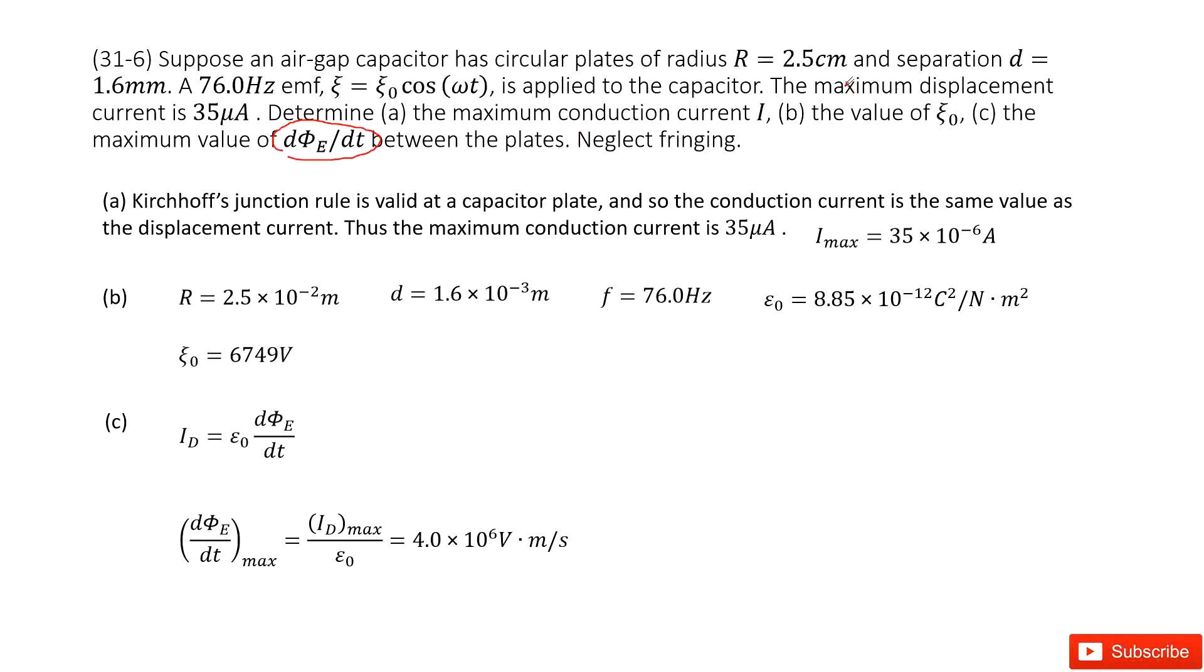This is going to tell you the maximum displacement current is given. So we can confirm the displacement current equals epsilon naught d phi E over dt. Now we need to know the maximum of d phi E over dt. So that is I_d maximum divided by epsilon naught. This maximum displacement current is given. So you input it inside divided by epsilon naught. You get the answer there. Thank you.